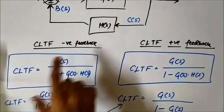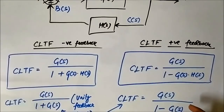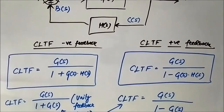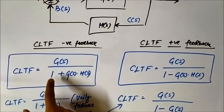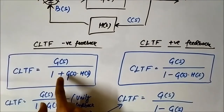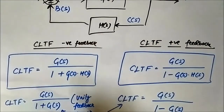Negative feedback is used almost all of the time. In almost every control system problem you encounter, you will find negative feedback. There are many reasons why negative feedback is preferred over positive feedback, despite causing a decrease in gain. We will discuss those reasons in a separate video, but the key point here is that the gain decreases with negative feedback while it increases with positive feedback — and yet negative feedback remains preferred.